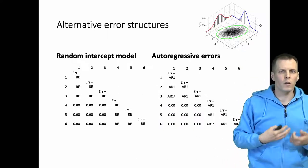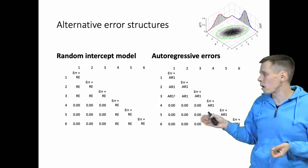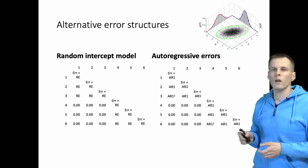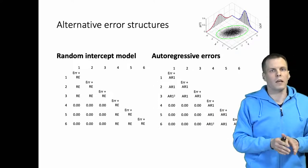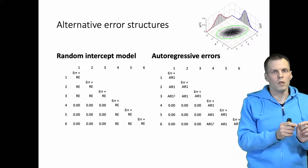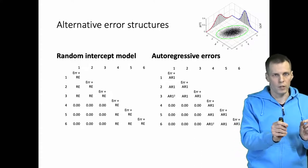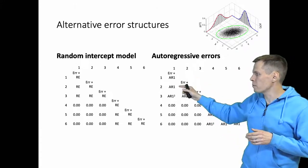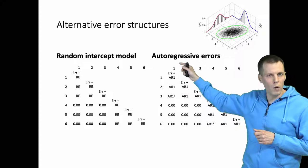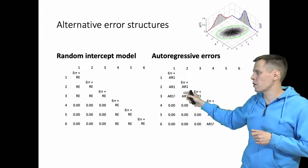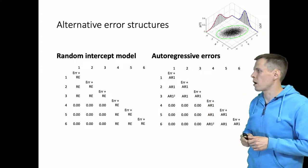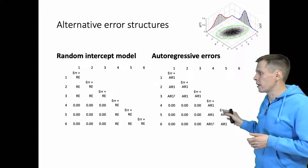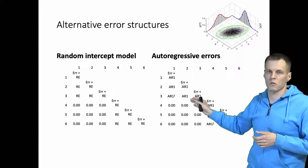Another commonly used error structure is the autoregressive errors. So the idea of autoregressive errors is that the error term of one observation depends on the previous time point and that depends on the previous time point. So we can see that observations between time one and time two are highly correlated. Time one and time three are less correlated because we raise the correlation to the second power. And again, between cluster correlations are zero.